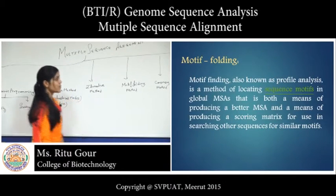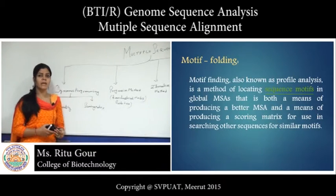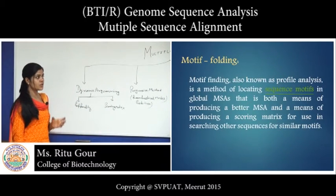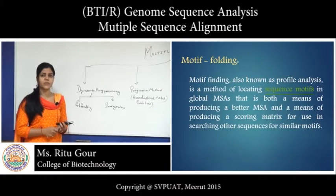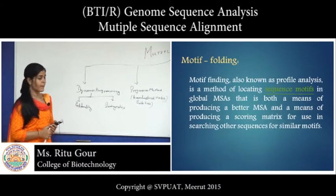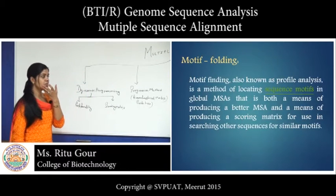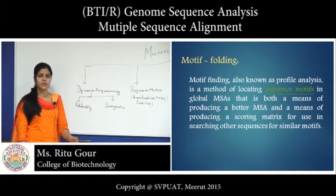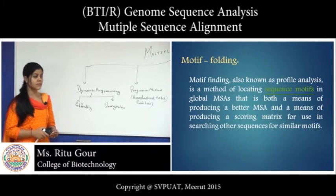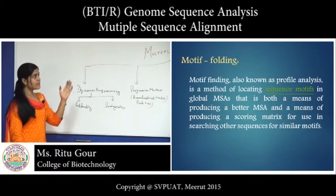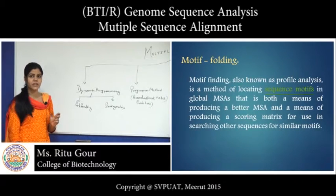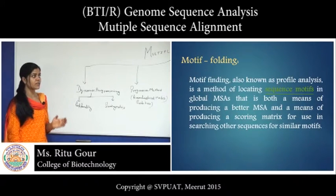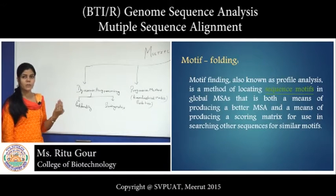Next is motif folding method. What is a motif? Motif is a super secondary structure of proteins, by which we can identify that portion of the protein which is highly conserved during evolution. We can say that a motif is that portion which always remains the same during evolution — it is called the conserved region. Motif folding method is used to find out the motifs between two or more sequences in multiple sequence alignment, to find out which region is highly conserved during evolution and which will be the common ancestor of these sequences.